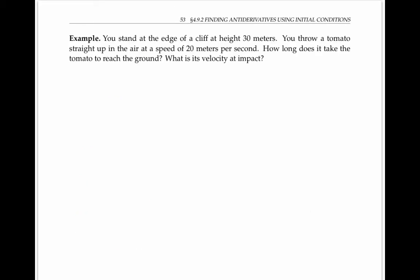In this final example, we're not given any equations, so we have to make them up ourselves. We're told that we're standing at the edge of a cliff at height 30 meters. We throw a tomato up in the air at an initial velocity of 20 meters per second. The tomato then falls down to the ground due to gravity, and we want to find how long that takes and what its velocity is at impact.